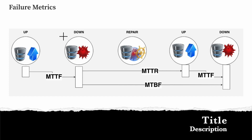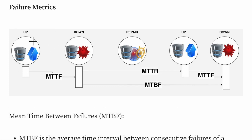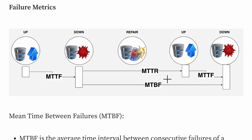There are some failure metrics we should be aware of. MTTF — Mean Time to Failure — is the average time from when the system is up to when it goes down. Mean Time to Repair (MTTR) is the average time it takes to investigate and fix the issue once the system has failed and bring it back up. Mean Time Between Failures (MTBF) is the average time between one failure and the next occurrence of a failure.